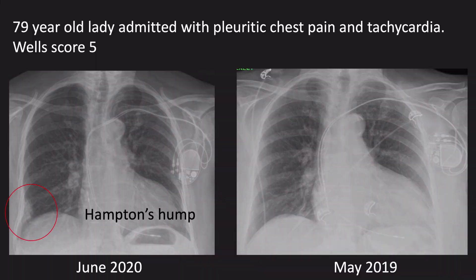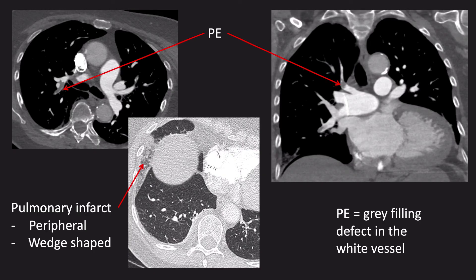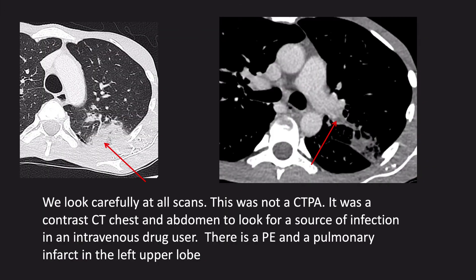This was a 79-year-old lady admitted with pleuritic chest pain and tachycardia, with a WELLS score of 5. On her chest x-ray compared to a previous study from May 2019, she has a pacemaker with right atrial and ventricular leads. On the current study, she has a new peripheral opacity in the right lower lobe called a Hampton hump — a dome-shaped, pleural-based opacity most commonly due to a pulmonary embolism and lung infarct, an area of dead tissue caused by a failure of blood supply. On the CTPA, we can see grey filling defects in the white pulmonary arteries consistent with pulmonary emboli. The associated infarct is seen as a white area peripherally in the middle lobe, corresponding to the Hampton hump seen on chest x-ray.